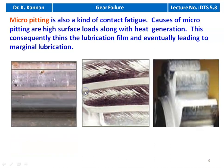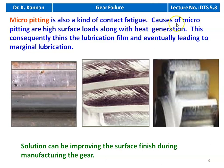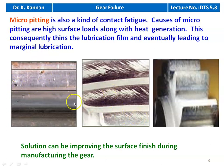Micro level pitting is also a kind of contact fatigue. Causes include high surface load along with heat generation, which may be due to improper lubrication. When there is insufficient lubrication on the gear blank, it leads to micro level pitting, which consequently thins the lubrication film and eventually leads to marginal lubrication. The heat generation reduces the effect of lubrication and leads to micro pitting. The solution is improving the surface finish during manufacturing of the gear.